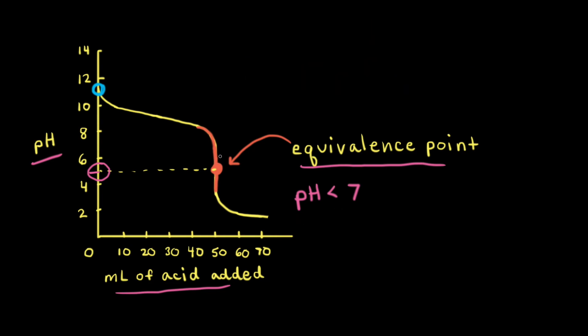Going back to the equivalence point on the titration curve and dropping down to the x-axis, we can see the equivalence point occurs after 50 milliliters of acid has been added. Since it took 50 mL of acid to neutralize all the ammonia, it would take half that volume — 25 milliliters — to neutralize half the ammonia. Drawing a dashed line up to the titration curve at 25 mL gives us the half equivalence point.